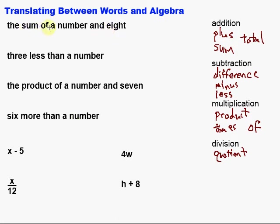This first one says the sum of a number and eight. So what we want to do is take a look at that and see what words are in there that suggest different things. Can we find an operation? Well, here's a word: sum. What operation does sum suggest? Well, if we look back, addition is suggested by the word sum. So we're going to be adding something.